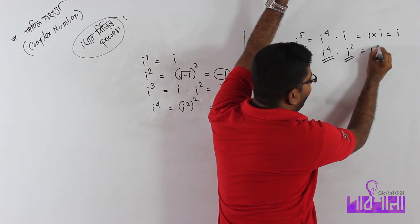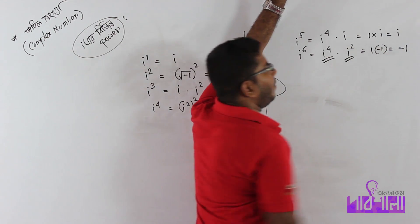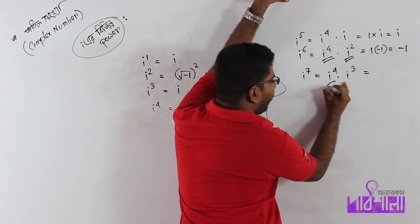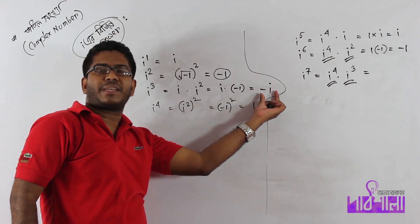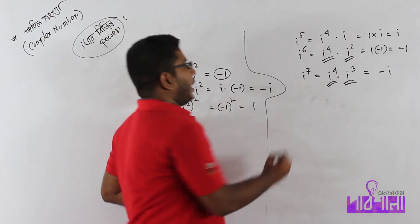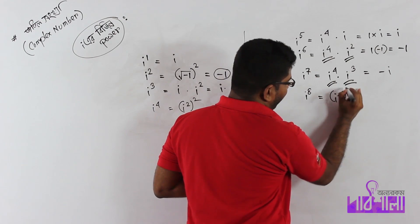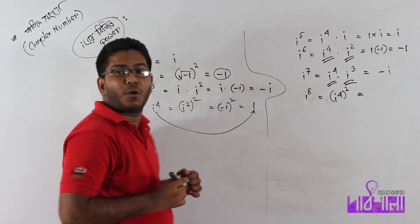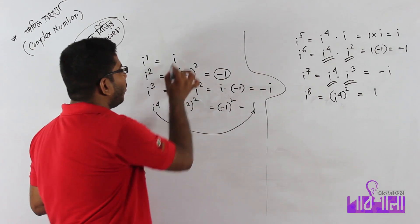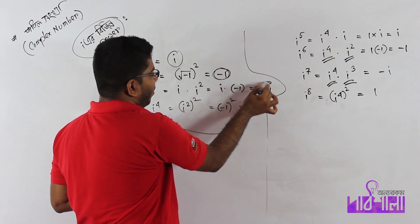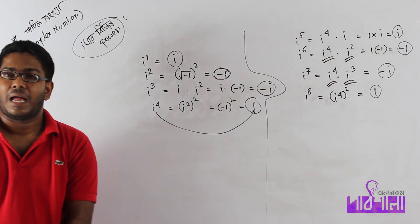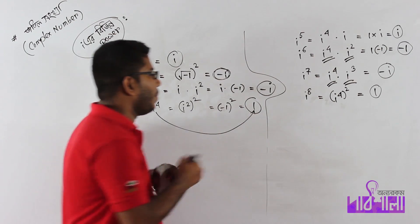i⁴ is just minus one. The result over that is minus one. i² and i⁴ — these are the core values to remember.